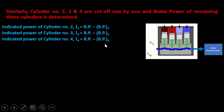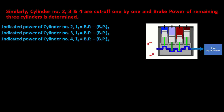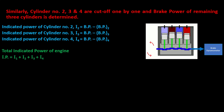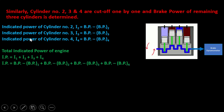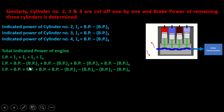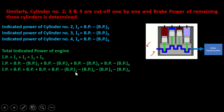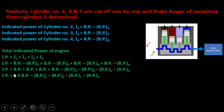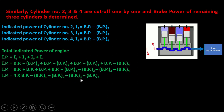We have found the indicated power of cylinder numbers 1, 2, 3, and 4. Total indicated power IP = I1 + I2 + I3 + I4. Substituting the values: IP = (BP − BP1) + (BP − BP2) + (BP − BP3) + (BP − BP4). Since there are four BP terms, we can write IP = 4·BP − (BP1 + BP2 + BP3 + BP4).